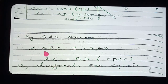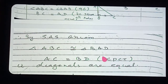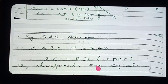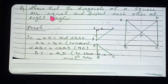From the corresponding parts, AC equals BD by CPCT. AC and BD are the diagonals. So the first part is proved — the diagonals of a square are equal.